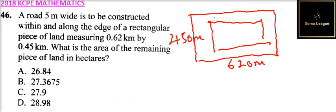So because the road is 5 meters wide, then what we do is we subtract 5 meters from both sides. So it means area remaining is equals to, when we subtract 10 from 450, that is 440. And that is the width, you multiply by subtract 5 from here and 5 from here so that gives us 610.